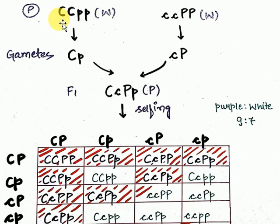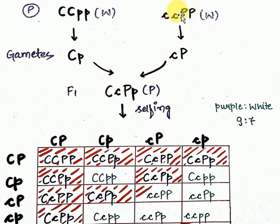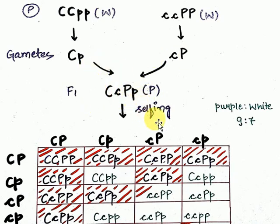Both parents are white because there is homozygous recessive condition — in gene P for the first parent and in gene C for the second parent. Both are needed in dominant phase. They will form gametes: capital C small p from the first parent, and small c capital P from the second parent. They will combine to form the F1 generation: capital C small c, capital P small p — that is CcPp.